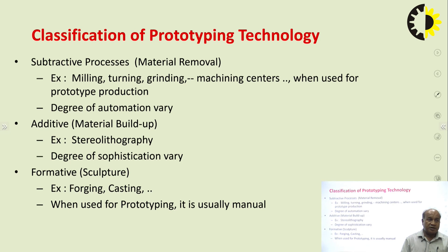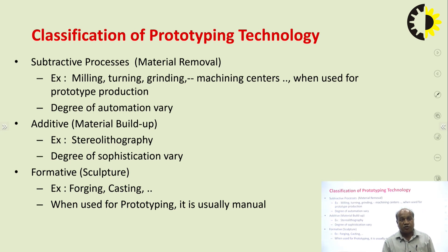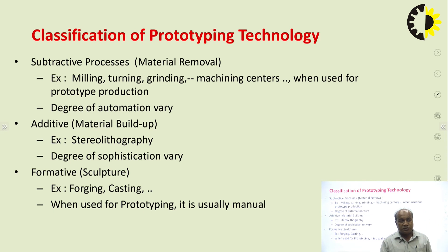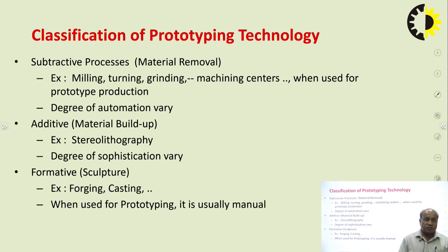We can classify prototyping technology in three major disciplines. First is the subtractive process — conventional material removal technology — where conventional machines like lathe, turning machine, and milling machine are used to remove material to produce the final prototype. In this subtractive process the degree of automation varies; it may be a fully automated CNC machine or a manual machine. The second is the additive or material additive approach, for example stereolithography apparatus, where the degree of sophistication varies and different types of technology are available. The third is the formative approach — forging, casting — which is a completely manual operation when used for prototyping.